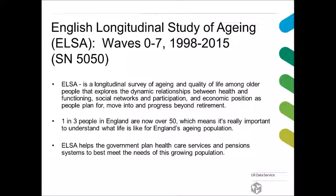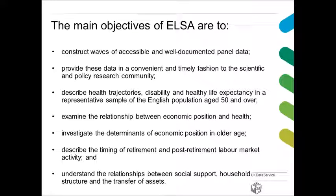Why is this so interesting? One in three people in England are now over 50, which means it's really important to understand what life is like for England's aging population. ELSA helps the government plan for healthcare services and pension systems to best meet the needs of this growing population. The main objectives of ELSA are to construct waves of accessible and well-documented panel data, to provide this data in a convenient and timely fashion to the scientific and policy research community, to describe health trajectories, disability, and healthy life expectancy in a representative sample of the English population aged 50 and over, to examine the relationship between economic position and health, to investigate the determinants of economic position in older age, to describe the timing of retirement and post-retirement labor market activity, and to understand the relationships between social support, household structure, and the transfer of assets.